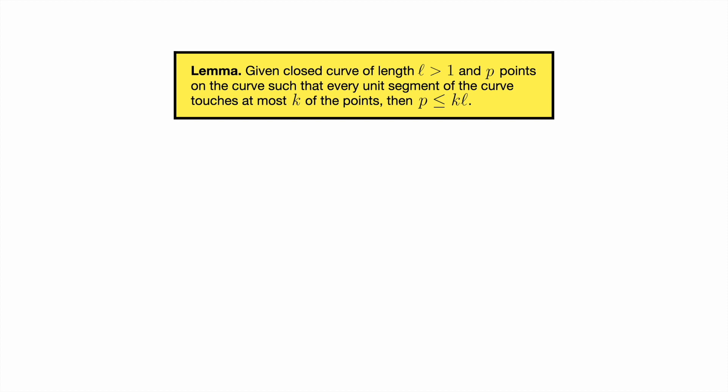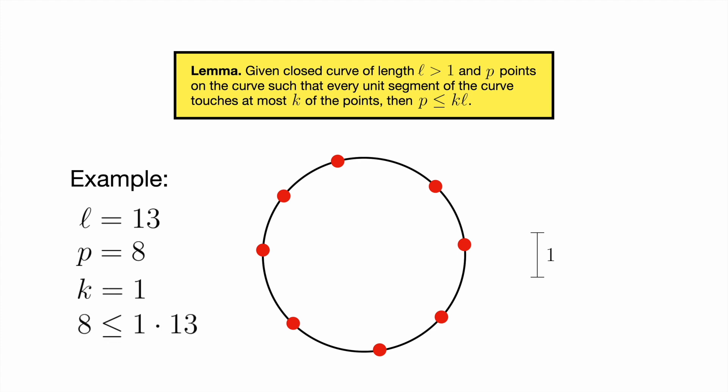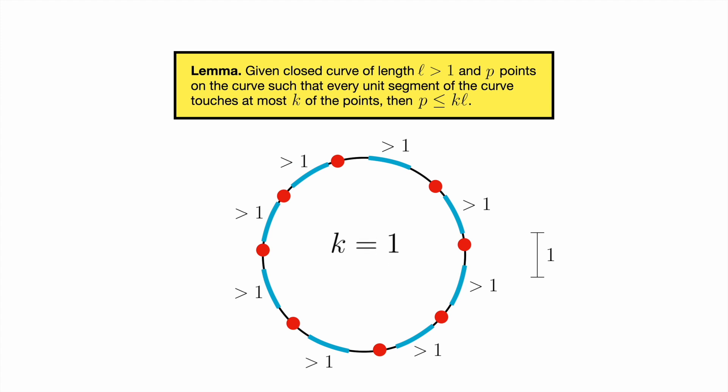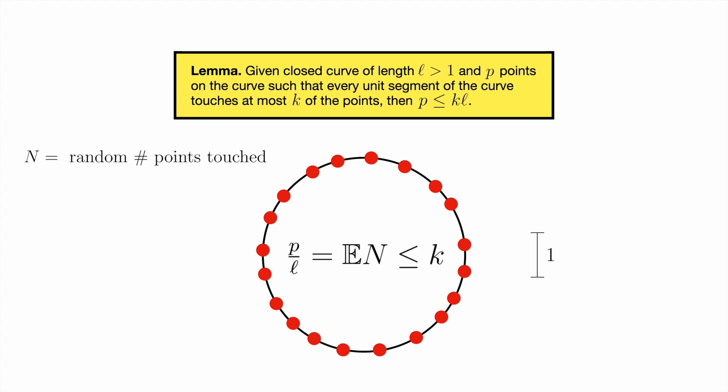For our next lemma, suppose we have a closed curve of length l that goes through p points in such a way that every unit segment in the curve touches at most k of the points. Then p is at most k times l. As a warm-up, let's suppose k is 1. This means adjacent points on the curve don't reside in a common unit segment, so they must have more than a unit of arc length between them. It follows that the total length of the curve is greater than the number of points, as predicted by the lemma. We're going to prove the general case using something called the probabilistic method. Draw a unit segment at random from the closed curve and count the number of points it touches. Let n denote this random number. By assumption, n never exceeds k, and on average, it's p over l. This falls from the fact that each point is touched by the random segment exactly 1 over l of the time. This application of linearity of expectation is reminiscent of the proof of Buffon's Noodle. So let's call this Buffon's SpaghettiO.